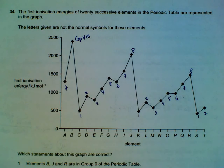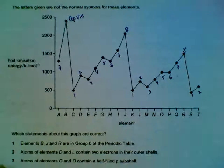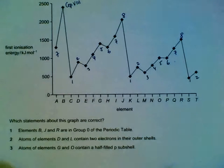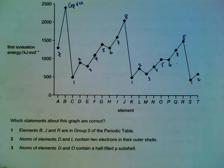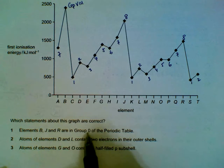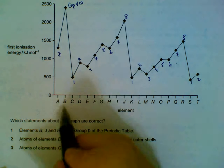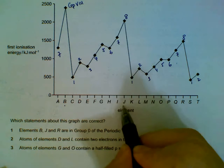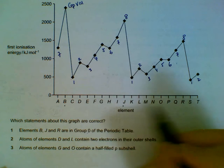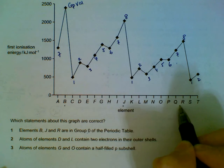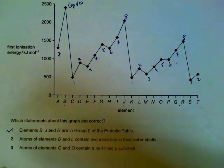Statement 1: B, J, and R are in Group 0, which is actually Group 8. B, J, and R are actually in Group 8, so this statement is correct.